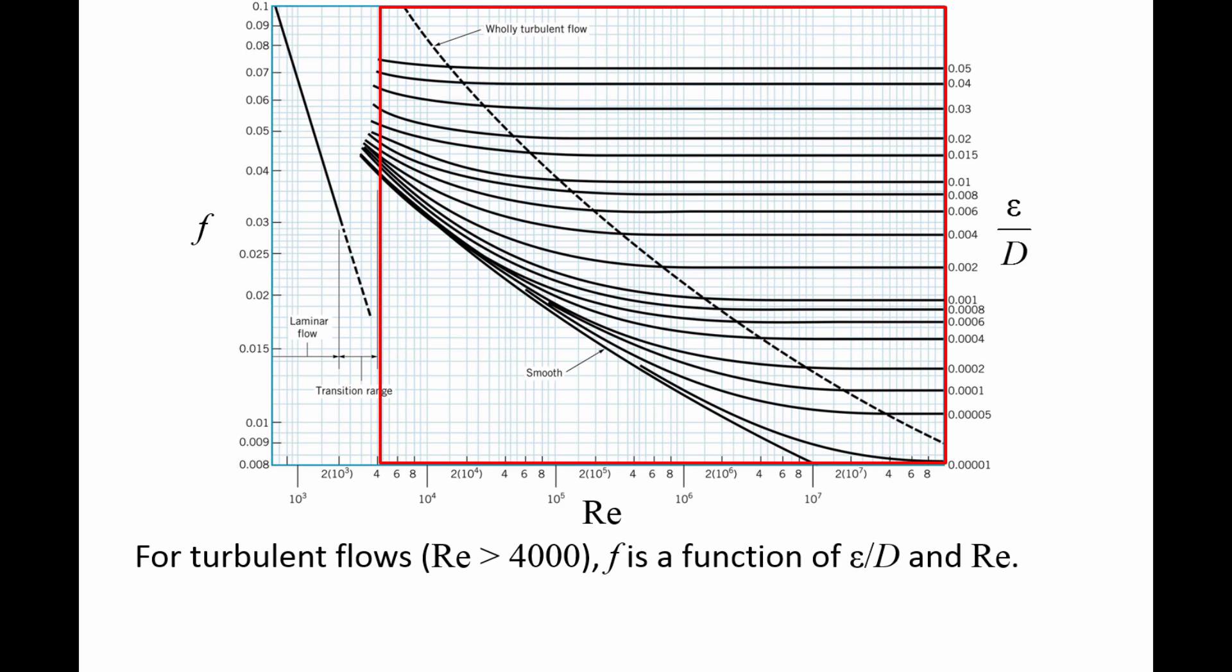The only way to plot a function of two variables on a two-dimensional graph is to hold one variable constant while varying the other. In the case of the Moody chart, the Reynolds number is varied while holding the relative roughness constant.